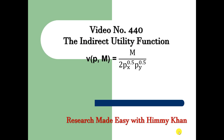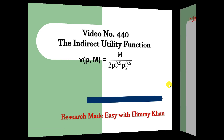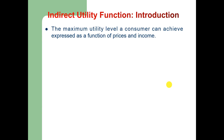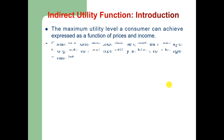Bismillah ar-Rahman ar-Rahim. Good afternoon and welcome to this new video. This video is based on the indirect utility function. Let me start with the introduction of the indirect utility function. The maximum utility level that a consumer can achieve, expressed as a function of prices and income, is known as the indirect utility function.